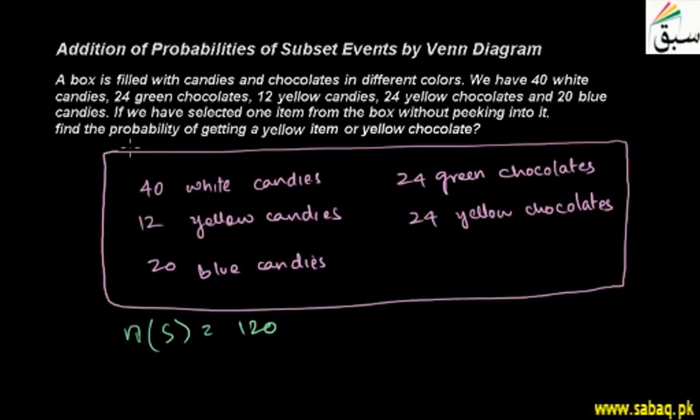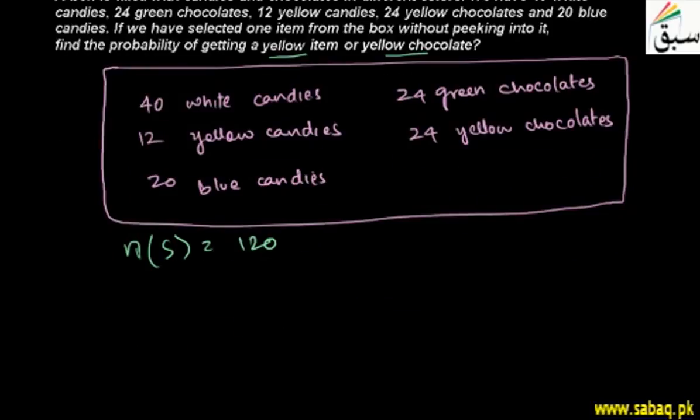We have to find the probability of getting a yellow item - meaning you get it in yellow color, whether it's chocolate or candy - or yellow chocolate. So there are two events. I will talk about two events.